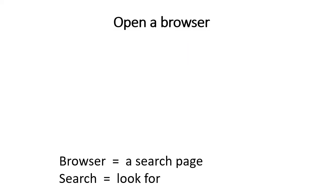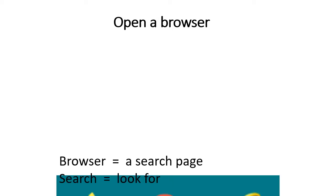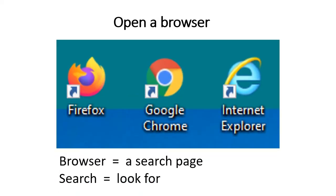First, you need to open a browser. A browser is also called a search page. Search means look for something. A browser helps you look for websites. Here are three browsers: Firefox, Google Chrome, and Internet Explorer. You should have one of these on your computer or smartphone. Click on one to search for a website.